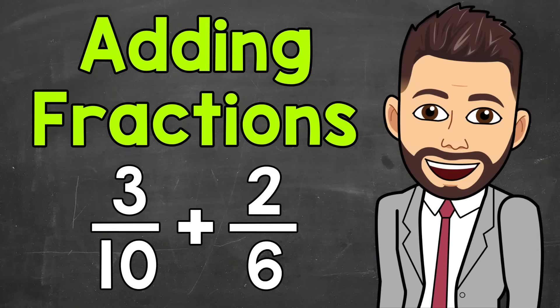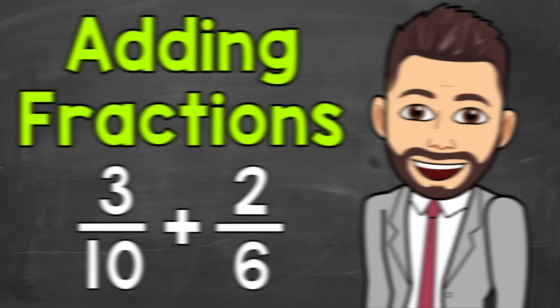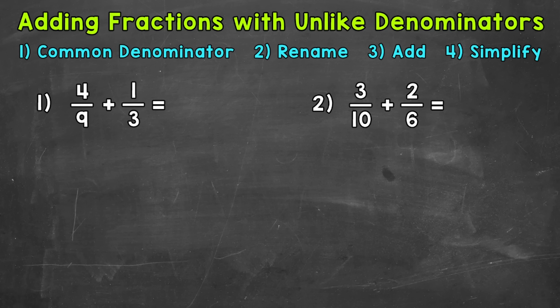Welcome to Math with Mr. J. In this video, I'm going to cover how to add fractions with unlike denominators. So let's jump into our examples, starting with number 1, where we have 4 ninths plus 1 third.